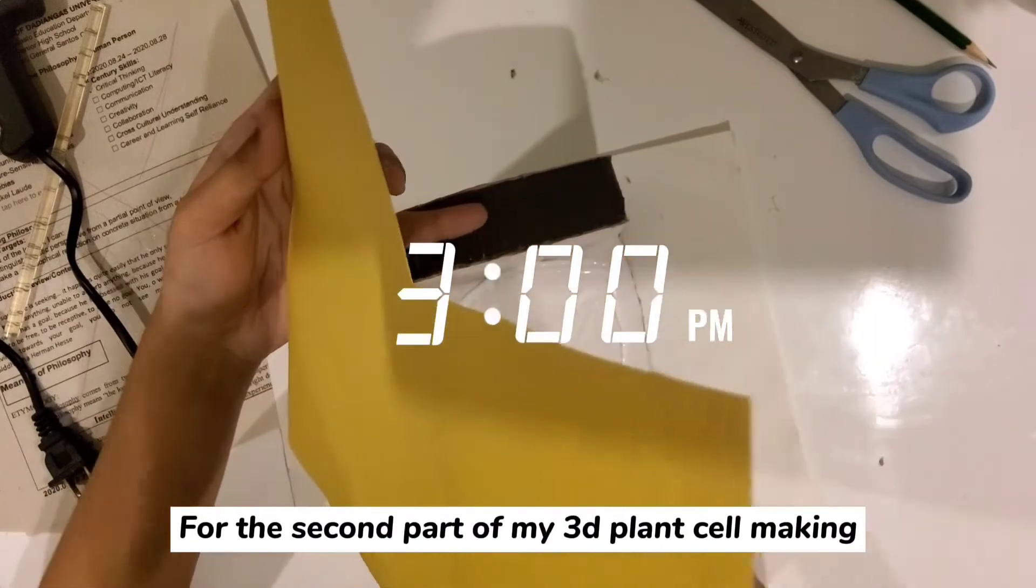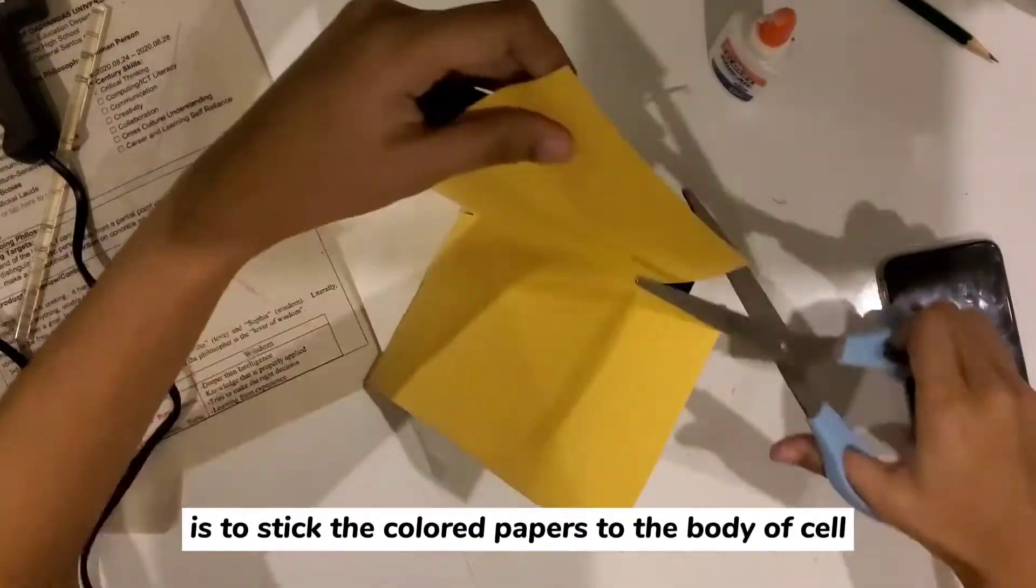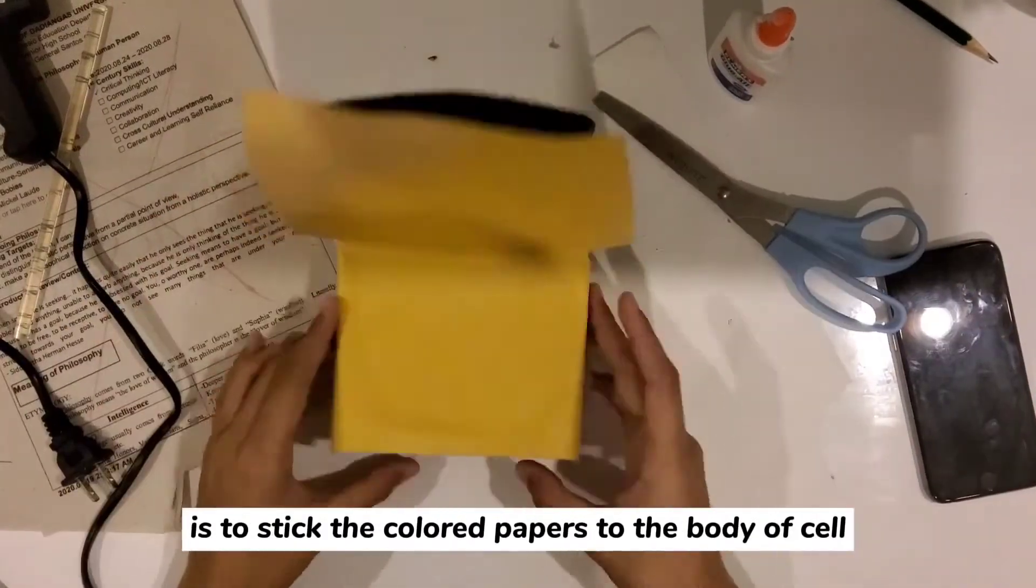For the second part of my 3D plant cell making is to stick the colored papers to the body of cell.